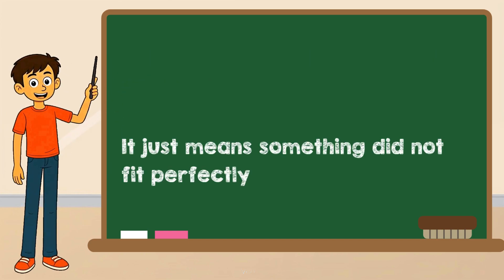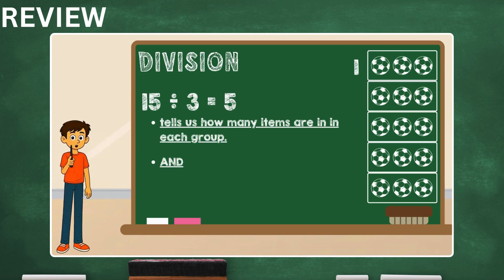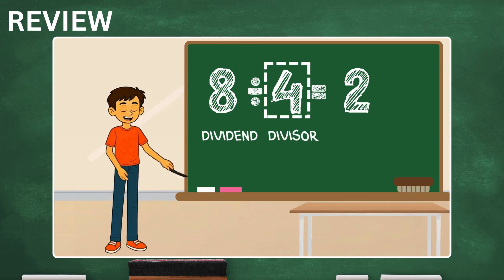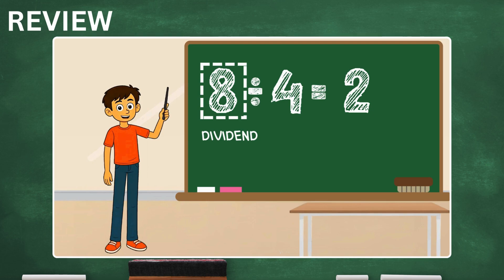Now let's look back at what we learned. Division means making equal groups. It can mean sharing equally, or grouping things into sets. Every division problem has three parts: dividend, divisor, and quotient.